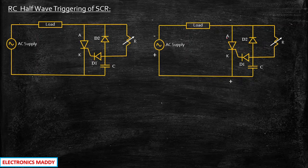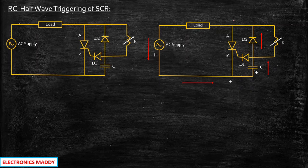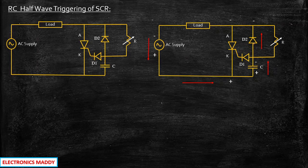During the negative half cycle, current starts flowing and the capacitor charges with a polarity of minus and plus — plus is connected at the lower plate and negative is connected to the upper plate. Current will flow through D2 because negative voltage is appearing at that point, and the same polarity appears in parallel. Negative is connected to the cathode, which means diode D2 will be forward biased. Current flows through this path, through D2, and keeps circulating in this direction.